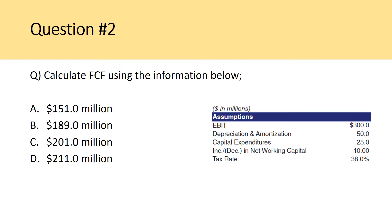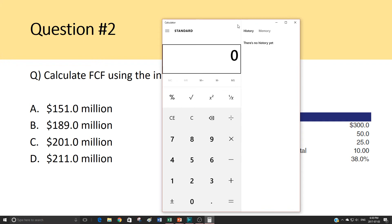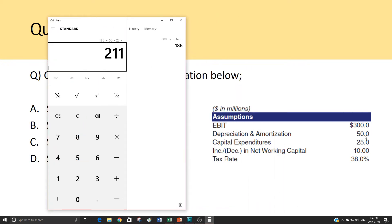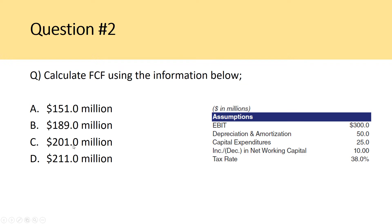Question number two: calculate free cash flow using the information below. The unlevered free cash flow formula really starts at EBIT, then we take away tax from EBIT — earnings before interest and tax — to get our net operating profit after tax. We then add back the non-cash charge of depreciation and amortization, take away capital expenditures, and then take away any change in net working capital. So we have EBIT pre-tax of $300, after-tax we get $186 net operating profit after tax, then add depreciation, subtract capital expenditures, and subtract the change in net working capital to get an unlevered free cash flow of $201 million.